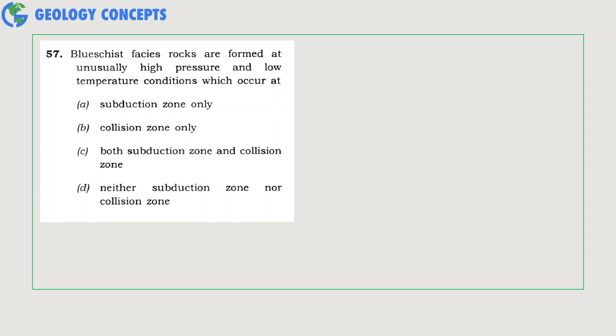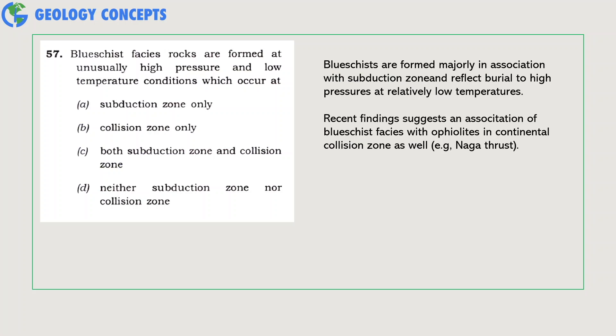Blueschist facies rocks are formed at unusually high pressure and low temperature conditions which occur at subduction zones. Blueschists are formed majorly in association with subduction zones and reflect burial to high pressure at relatively lower temperatures. However, recent findings suggest an association of blueschist facies with ophiolites in continental collision zones as well, for example found in the Naga thrust region. Hence, option C will be the most suitable answer.